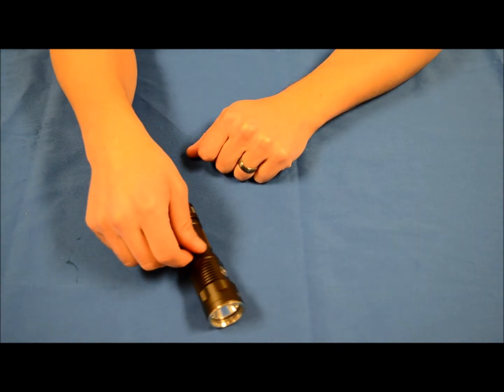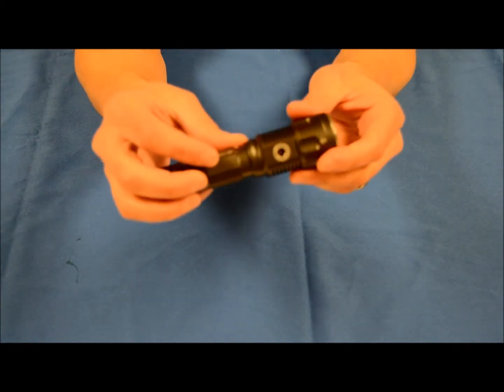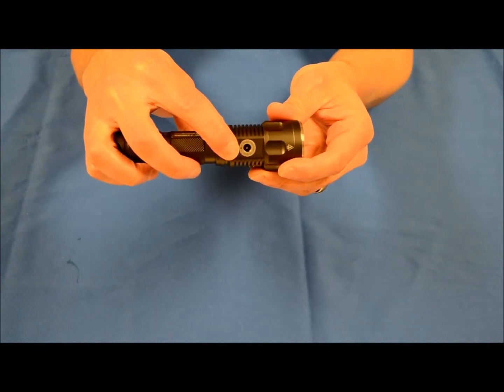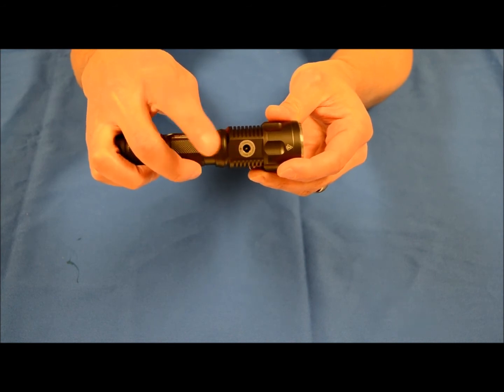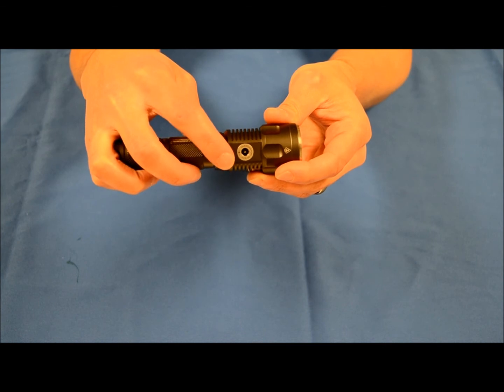And here is the charging port on the back. There is no rubber plug for the charging port which leads us to believe that Jetbeam has done all its waterproofing on the inside, which is kind of cool. You won't have a rubber boot to lose when you're out in the field or doing whatever it is you're going to do with this light.